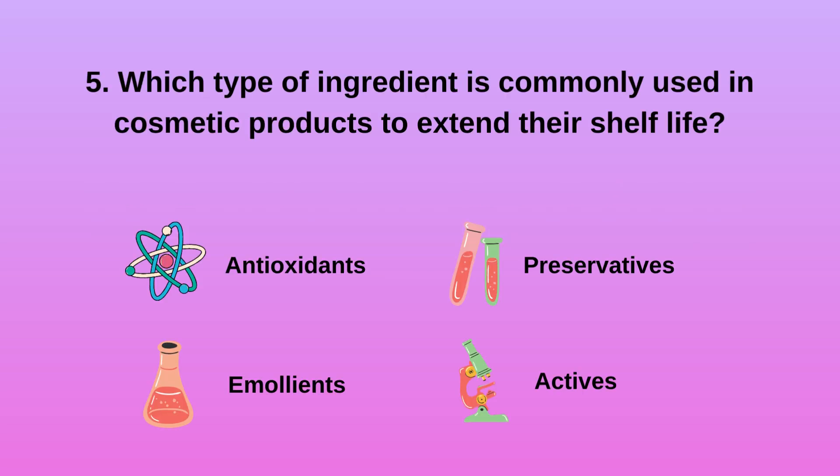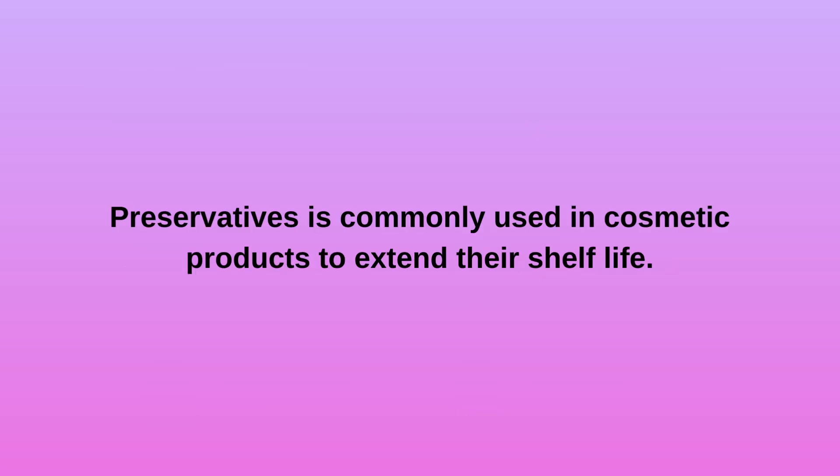5. Which type of ingredient is commonly used in cosmetic products to extend their shelf life? A. Antioxidants. B. Emollients. C. Preservatives. D. Actives. Preservatives are commonly used in cosmetic products to extend their shelf life.